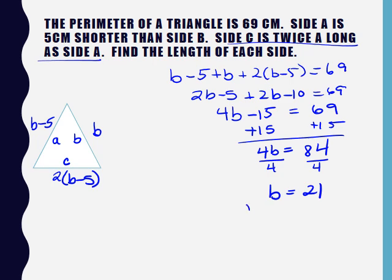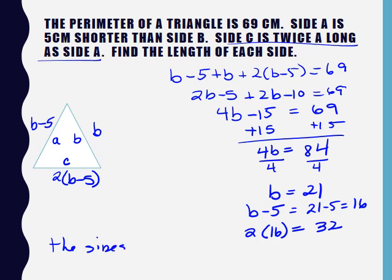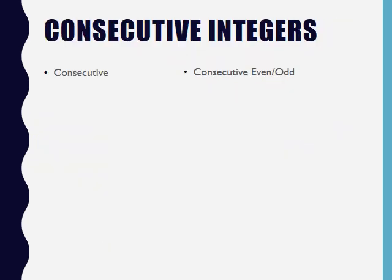If I divide by 4, B is going to equal 21. So my three sides are B is 21, B minus 5 which is 21 minus 5 or 16, and 2 times B minus 5 which was 16, which is 32. So the three sides are 21 centimeters, 16 centimeters, and 32 centimeters. And you must use labels—it makes a big difference between centimeters and meters.